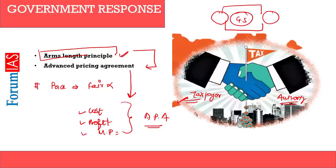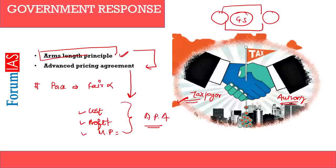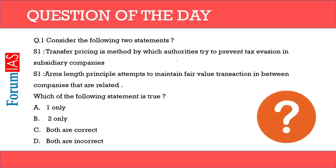So to recap: first we covered transfer pricing — the manipulation of prices. We saw how, when unrelated, the transfer was at $70; when related, the price was misquoted to $60, profit was underestimated from $20 to $10, and less tax was paid. To avoid this, we use the Arms Length Principle. And to give it a practical shape, we use the Advanced Pricing Agreement. The Arms Length Principle is implemented through the Advanced Pricing Agreement.